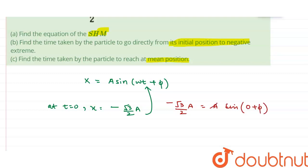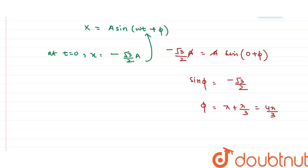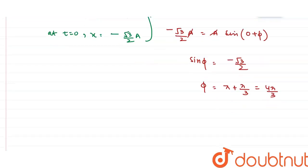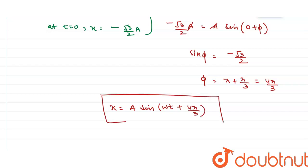After cancelling a, the value of sin φ comes out to be minus root 3 by 2. This means φ equals π plus π/3, since sin is negative and root 3 by 2 corresponds to π/3. So φ comes out to be 4π/3. Therefore, the displacement equation for SHM can be written as x equals a·sin(ωt + 4π/3). This is the answer to part A.